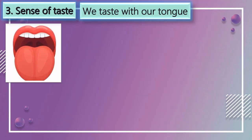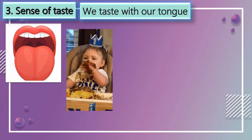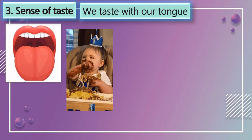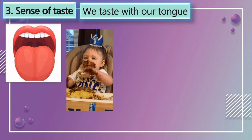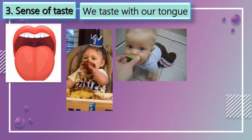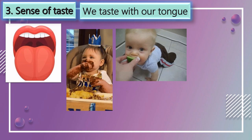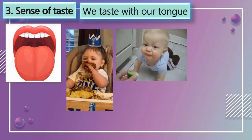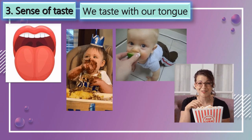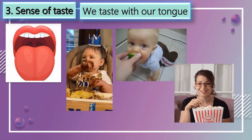Next one, the sense of taste. We taste with our tongue. For example, a boy is eating a cake — it's yummy. The boy is eating a lemon, so it is sour. Auntie is eating popcorn, so it is salty.